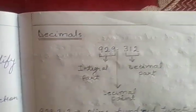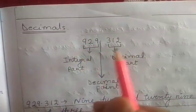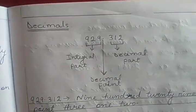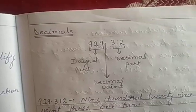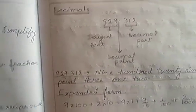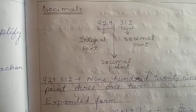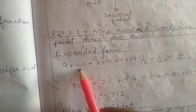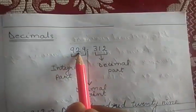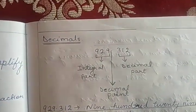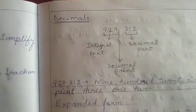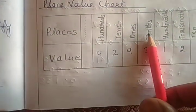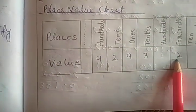Now the decimal part — you have already studied in class 5 and class 6 how to write and read decimal numbers. For example, 929.312. The expanded form is 9 into 100 plus 2 into 10 plus 9 into 1 plus 3 upon 10 plus 1 upon 100 plus 2 upon 1000. Using the place value chart: 3 is on the tenths, 1 is on the hundredths, and 2 is on the thousandths.